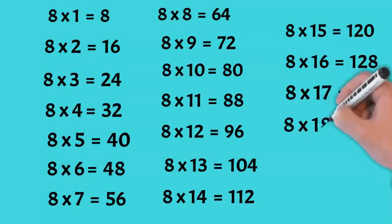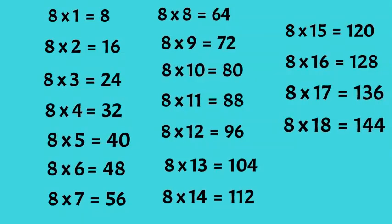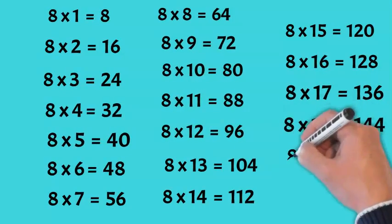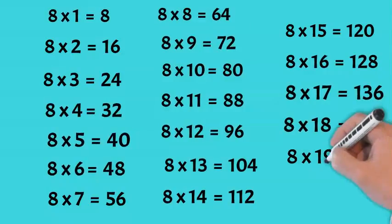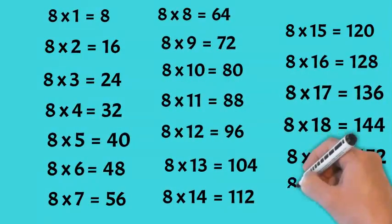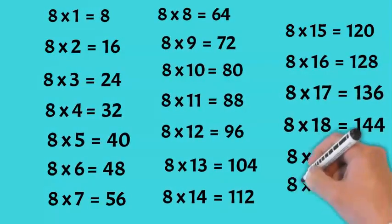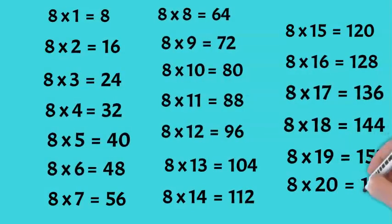Eight times seventeen is 136. Eight times eighteen is 144. Eight times nineteen is 152. Eight times twenty is 160.